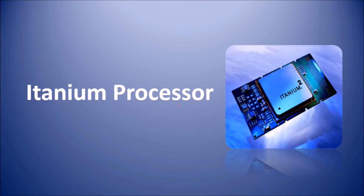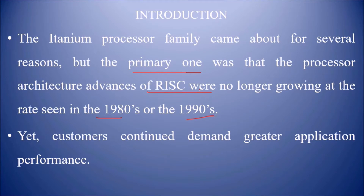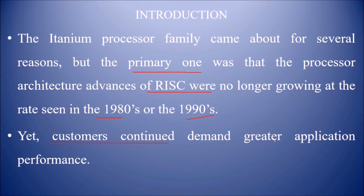Let us talk about Itanium processors. The Itanium processor family came about for several reasons, but the primary one was that the processor architecture advances of RISC were no longer growing at the rate seen in the 1980s or 1990s. That is why the Itanium processor family was introduced. Moreover, there was continued customer demand for greater application performance — as gaming was in boom — so customers wanted a more powerful, higher-performance processor, and for that Itanium was introduced.